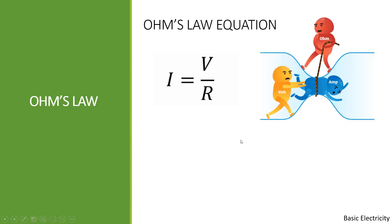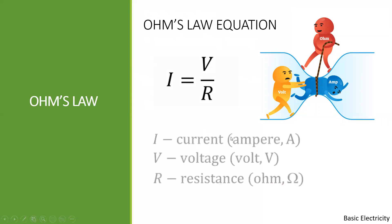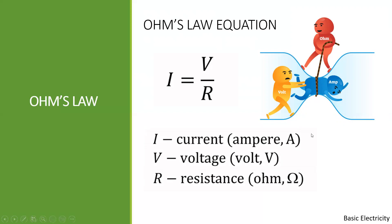Ohm's Law equation can be expressed as I equals V divided by R, where I is the current expressed in Ampere (A), V is the voltage with unit Volt (V), and R is the resistance expressed in Ohm, or the Greek letter Omega.